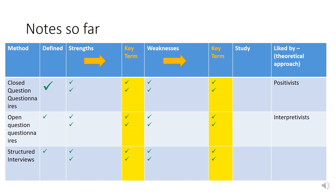Your notes so far should look like this. You should have gone through and defined all the methods, have two strengths for each method linking to key terms, and two weaknesses for each method linking to key terms. We haven't done studies yet — that's for next week. But I'd like you to try now to put in the theoretical approach that would choose this kind of method. For example, using a closed-question questionnaire would probably be liked by positivists, because you get quantitative data quite easily, allowing large and representative samples. Have a go at filling in that last column — 'liked by.'